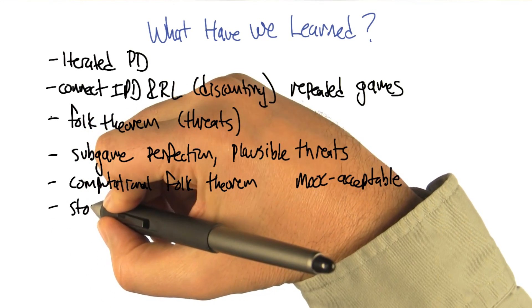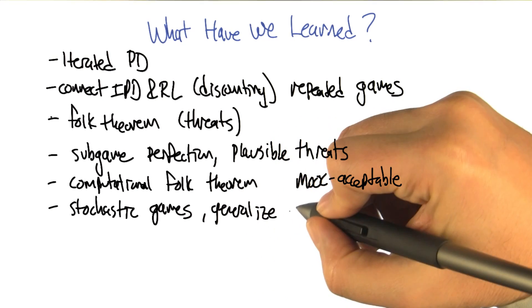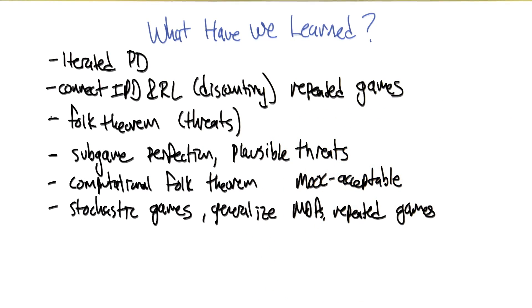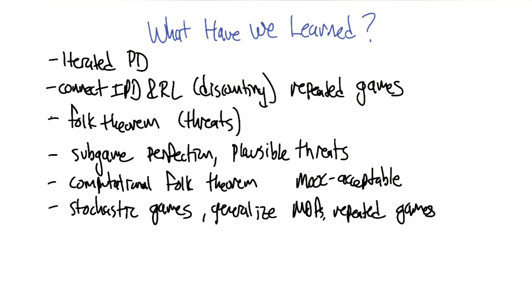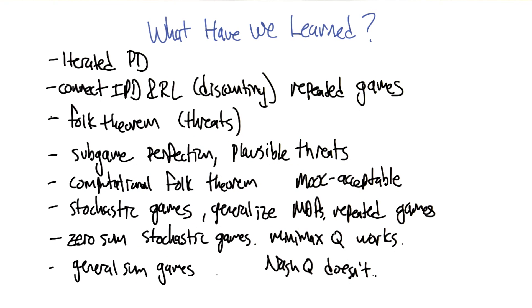Then we switched to stochastic games. Mm-hm. And they generalized MDPs and repeated games. Mm-hm. Anything else? Well, that particularly got us to Minimax Q, and then eventually to Nash Q. But despite the fact that Nash Q doesn't work, we ended up in a place of hope.